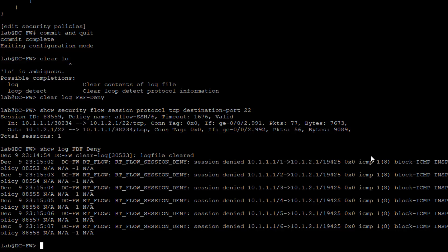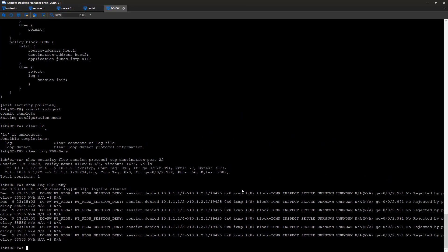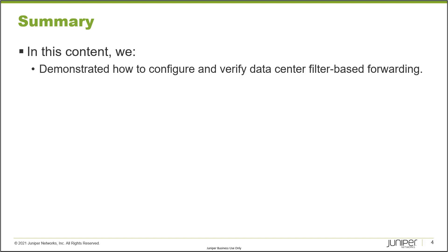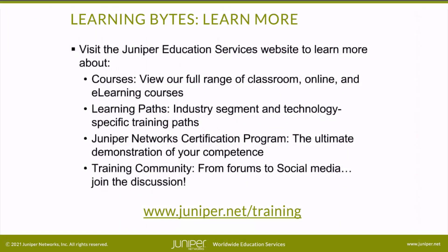Filter-based forwarding is working — we're forwarding traffic from host 1 to host 2 through the data center firewall exactly as intended. That brings us to the end of this learning byte; we demonstrated how to configure and verify data center filter-based forwarding. Thanks for watching. Visit the Juniper Education Services website to learn more about courses, including classroom, online, and e-learning options, learning paths, the Juniper Networks Certification Program, and the training community forums.